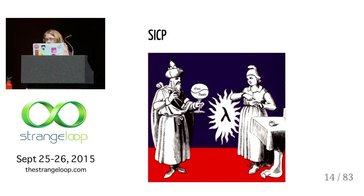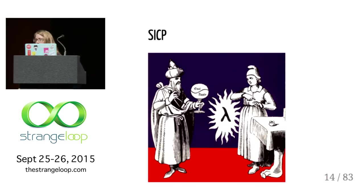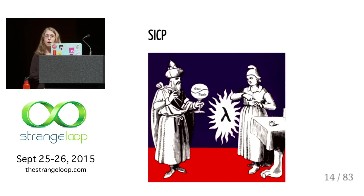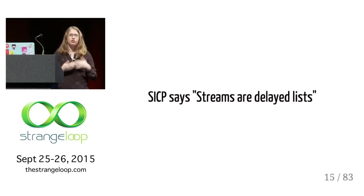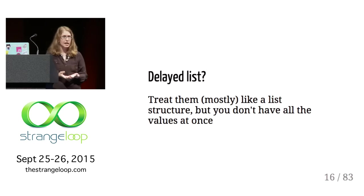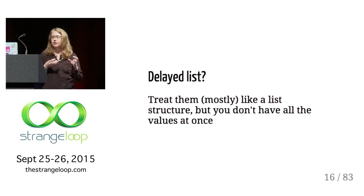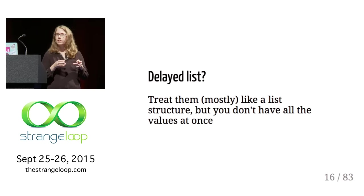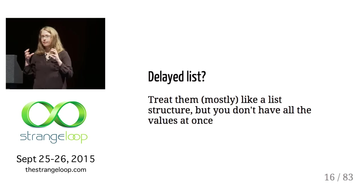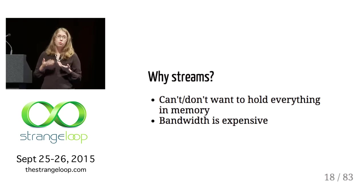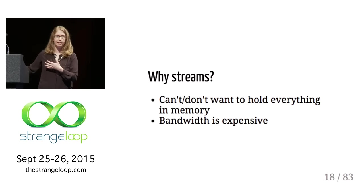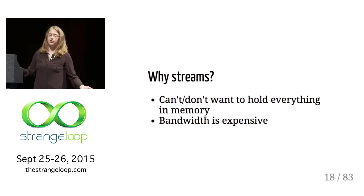I'll reference SICP a couple of times. Structure and Interpretation of Computer Programs is generally a textbook — if you have a CS degree, you may have used it. SICP says: 'streams are delayed lists.' A delayed list means we can treat them mostly like a list structure, but you don't have to have all the values at once. It's a data structure that lets us do list operations without the expense and annoyance of having to hold everything in a list. So why would you use them? Because we can't or don't want to hold everything in memory, and bandwidth is expensive.